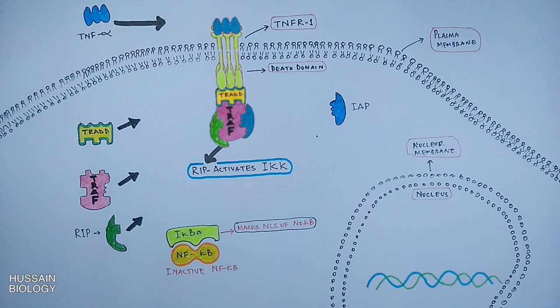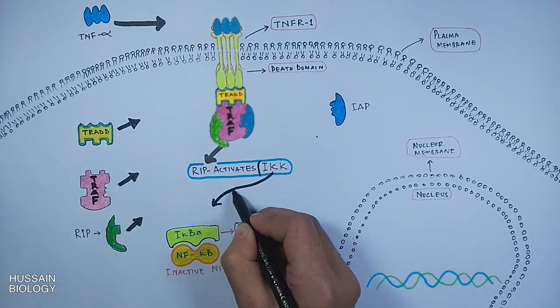What we have to do is remove this IκBα molecule from the NF-κB molecule so that it becomes active. To do this, we have already activated the IKK molecule.